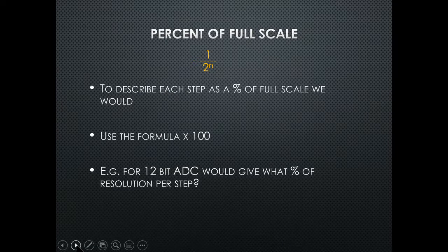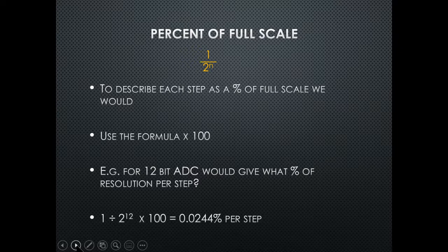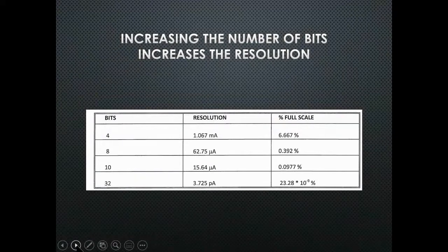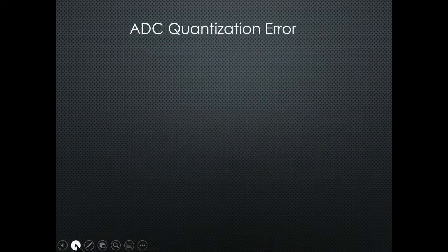For a 12-bit ADC: 1 ÷ 2¹² × 100 = 0.0244% per step — that's high resolution. Increasing the number of bits increases the resolution. A 4-bit system gives resolution of 1.67 milliamps per step; 8-bit gives 62.75 microamps; 10-bit gives 15.64 microamps. As the number of bits increases, the resolution increases.